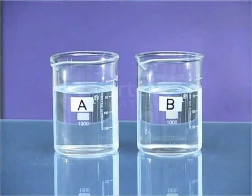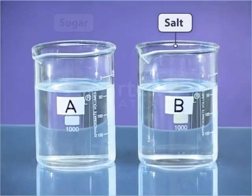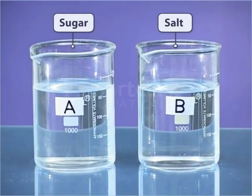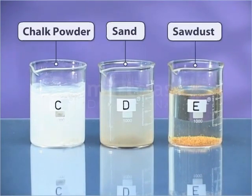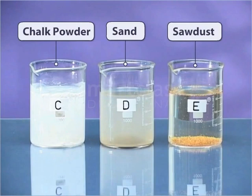Observations. You can see that salt and sugar dissolve completely in water. Therefore, salt and sugar are soluble in water. The other substances like chalk, sand, and sawdust do not mix with water and do not disappear even after you stir the water for a long time. Chalk powder, sand, and sawdust are insoluble in water.